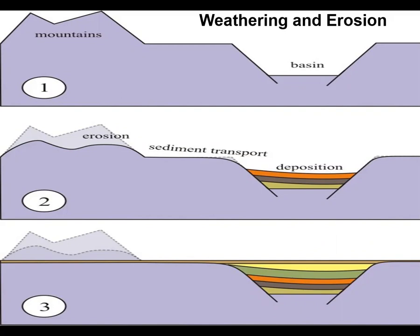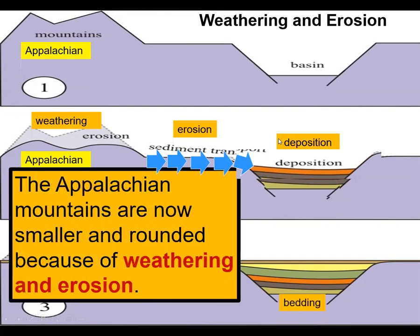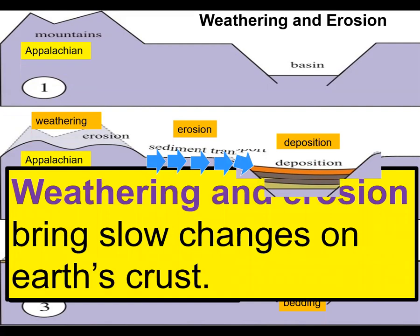Though weathering and erosion are slow, they can make mountains shrink. Just like what happened to the Appalachian mountains to the west of North Carolina — they were actually gigantic mountains before. But because of weathering and erosion, they have diminished into hills. Some are already very low because they were weathered, eroded, and the eroded material deposited in rivers and lakes, making those rivers and lakes shallow. The Appalachian mountains are now smaller and rounded because of weathering and erosion, and in the future, the Appalachians will also be flattened.